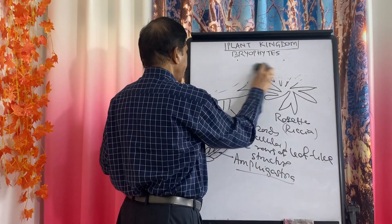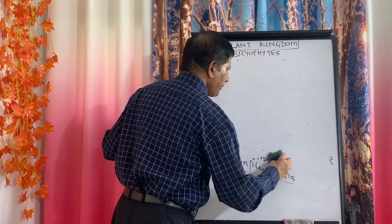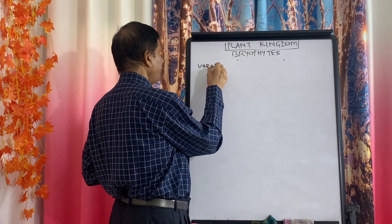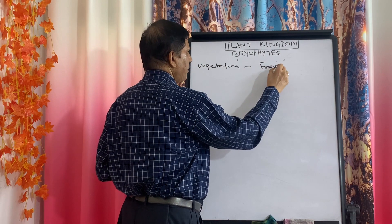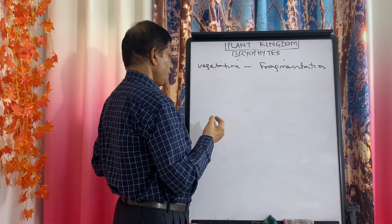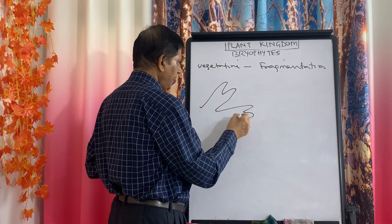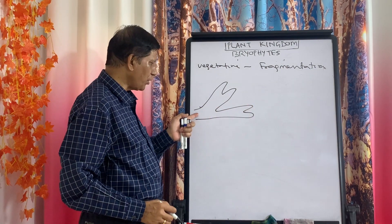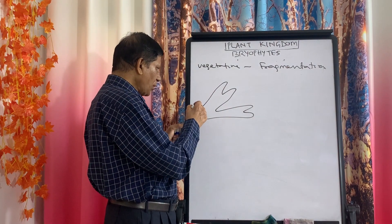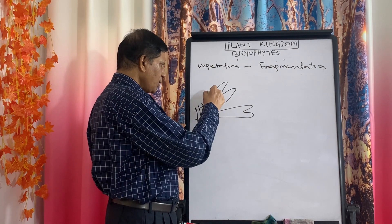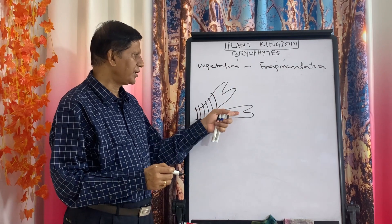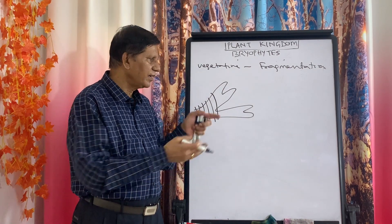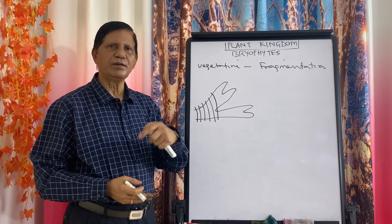Reproduction may be vegetative, asexual, or sexual. Vegetative reproduction usually takes place by fragmentation. The apical part is the growing part, while the old part dies and decays. When death and decay reaches the point of dichotomy, the two branches are separated — this is fragmentation.